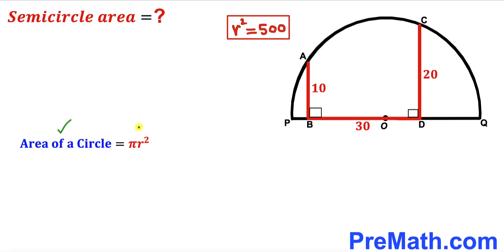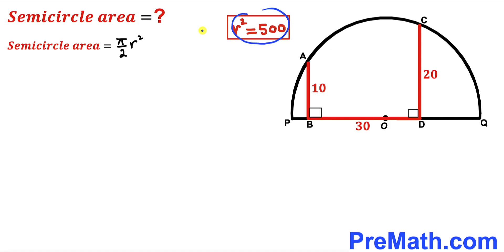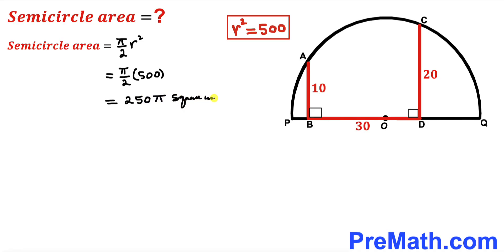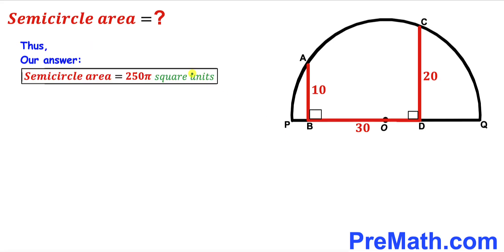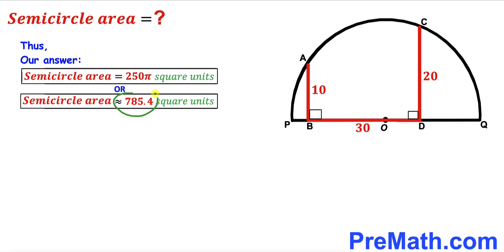For the final step, we calculate the area of the semicircle. The area of a full circle is π r², so the semicircle area is (π/2) × r². Substituting r² = 500, we get (π/2) × 500 = 250π square units. That's approximately 785.4 square units. Thanks for watching, and please don't forget to subscribe to my channel for more exciting videos!